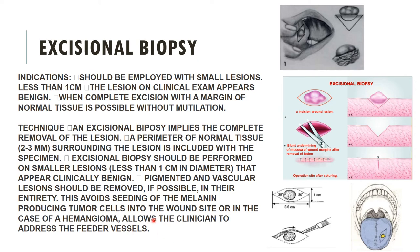In excisional biopsy, the incision is made around the lesion with 2 to 3 mm of normal tissue. Blunt undermining of the wound margin is done after removal of the tissue, and the operation site is sutured. You can see in the diagram: the lesion is completely removed and the site is sutured.